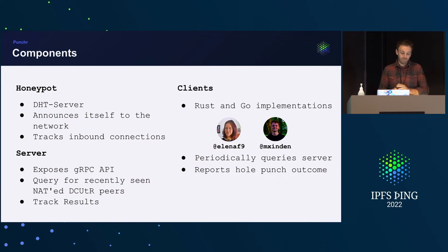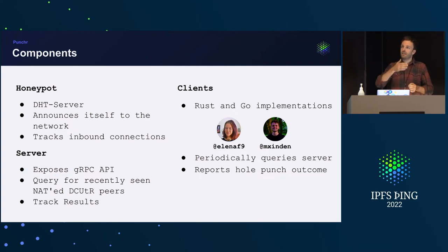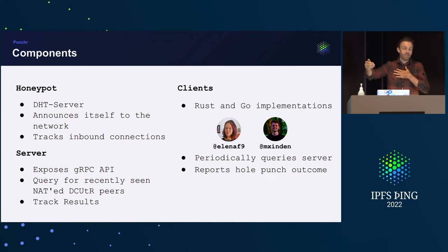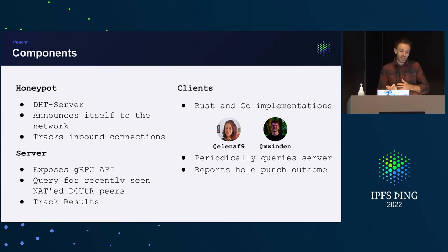The honeypots are just regular DHT server peers running on our servers. The only thing they do is announce themselves to the network by walking the DHT — enumerating the DHT quite slowly. The honeypot is a very stable peer, so the hope is it gets inserted into the routing tables of remote peers. When peers behind NATs interact with the DHT they get routed to our honeypot, allowing us to detect clients behind NATs over time.